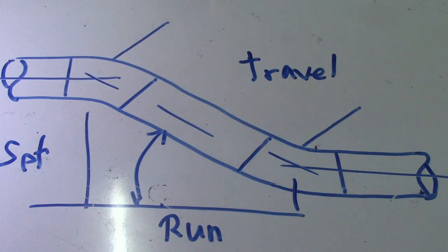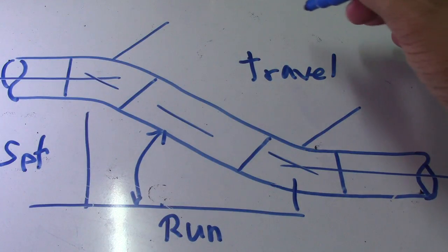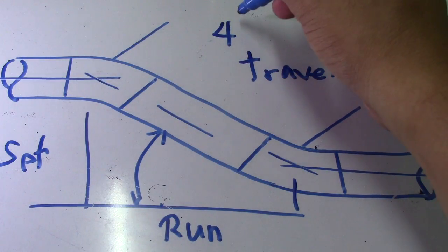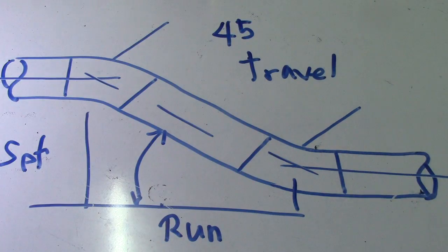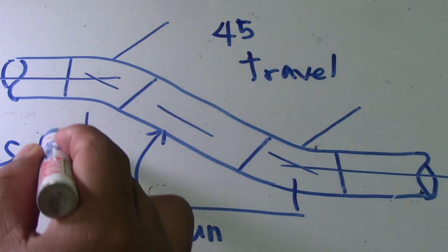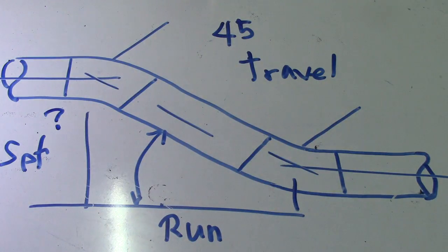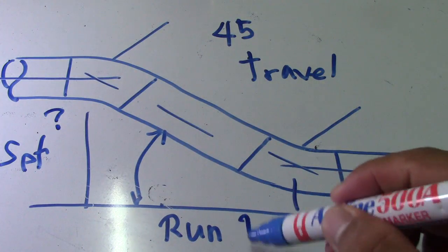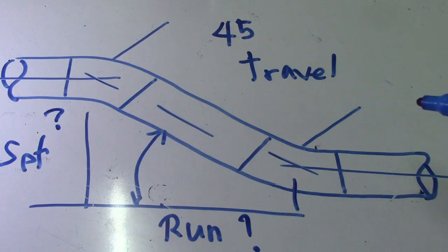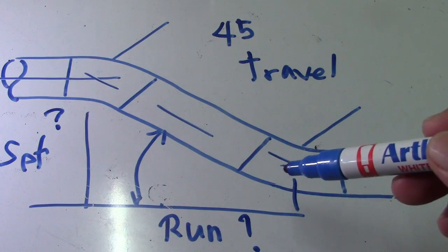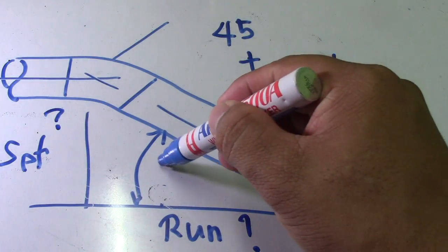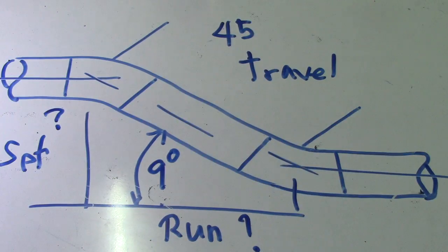Let's say I will interview you. I have a question for you: we have a given travel of 45, and the question is to find the set and run. The given angle is 9 degrees.